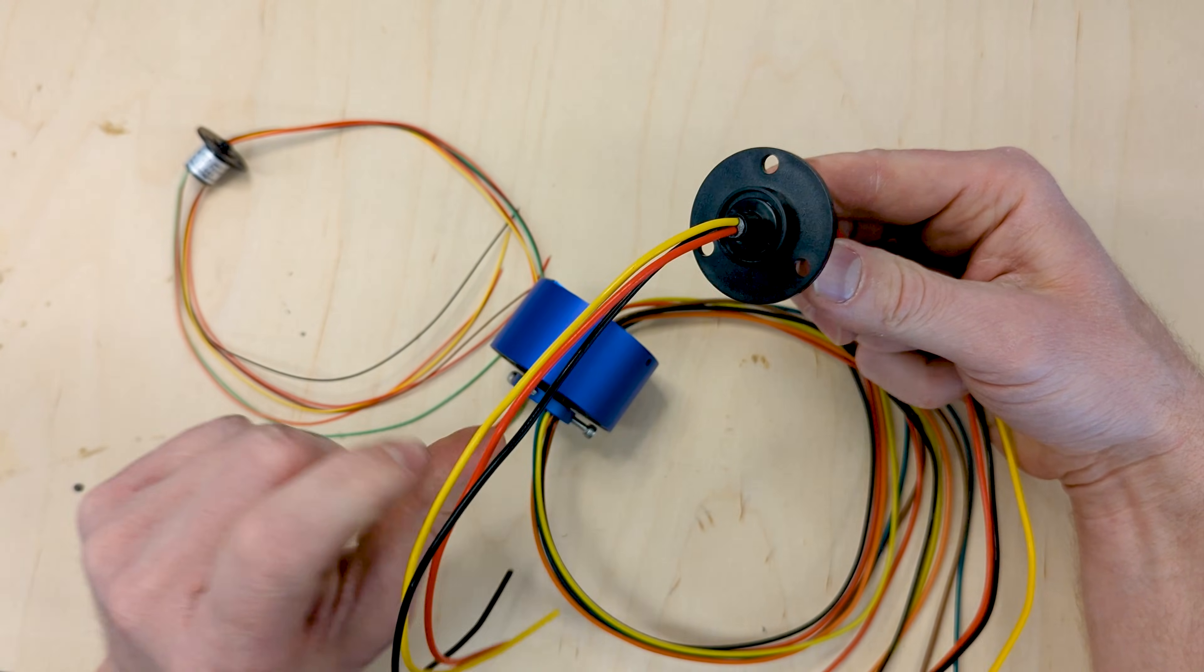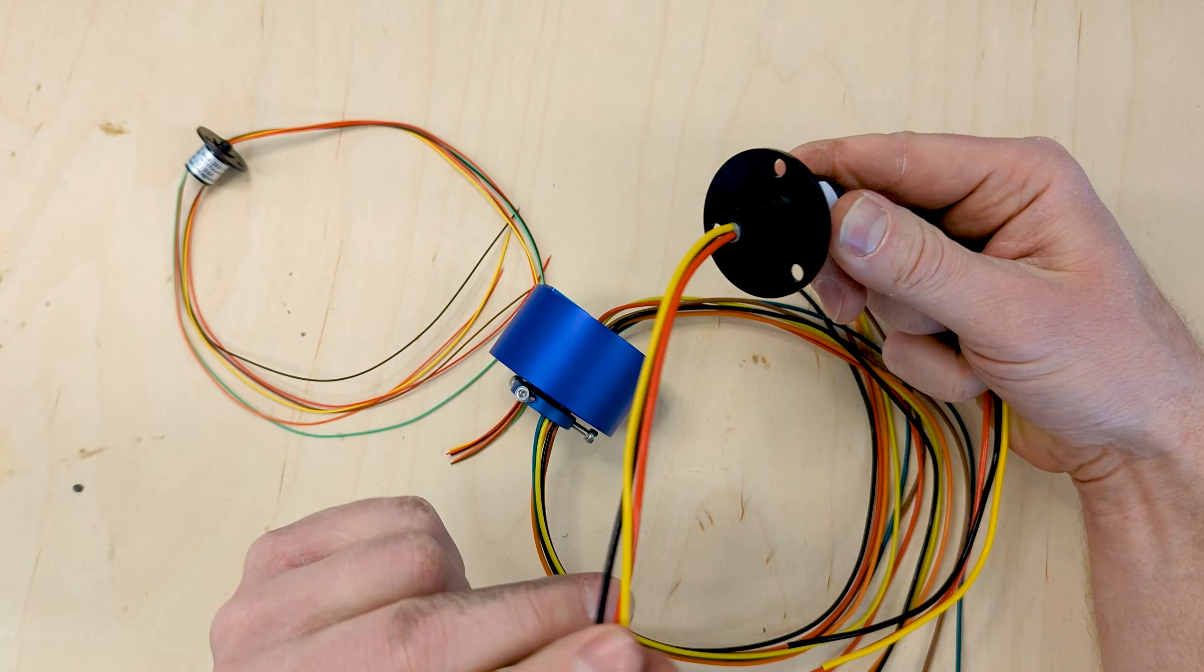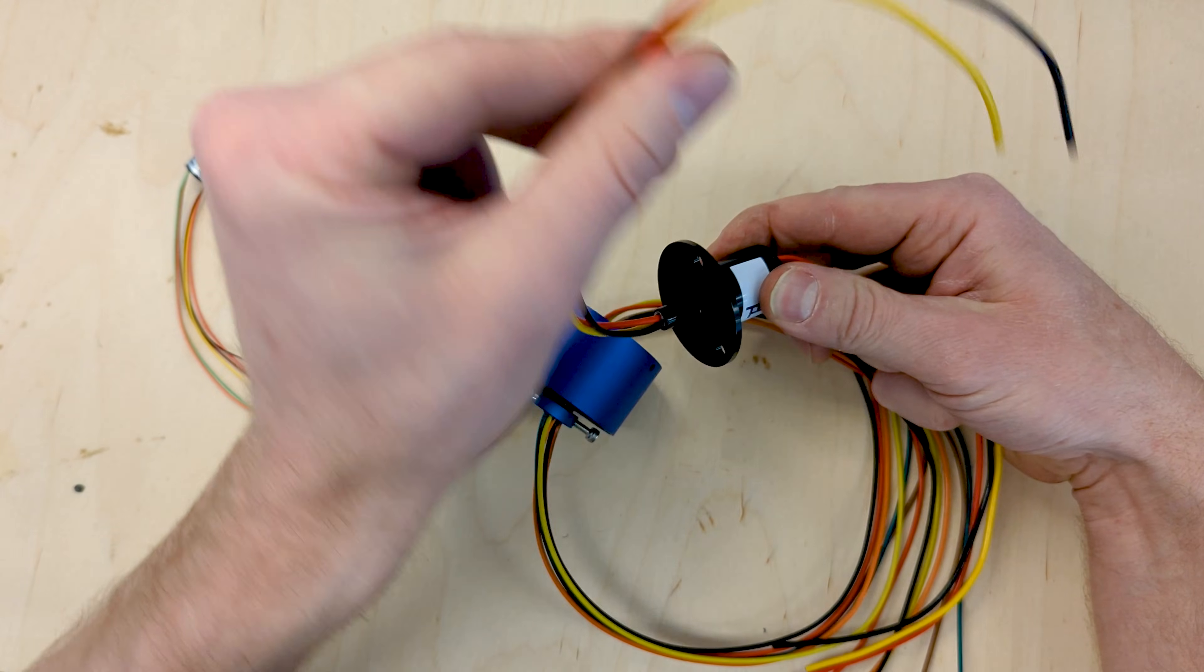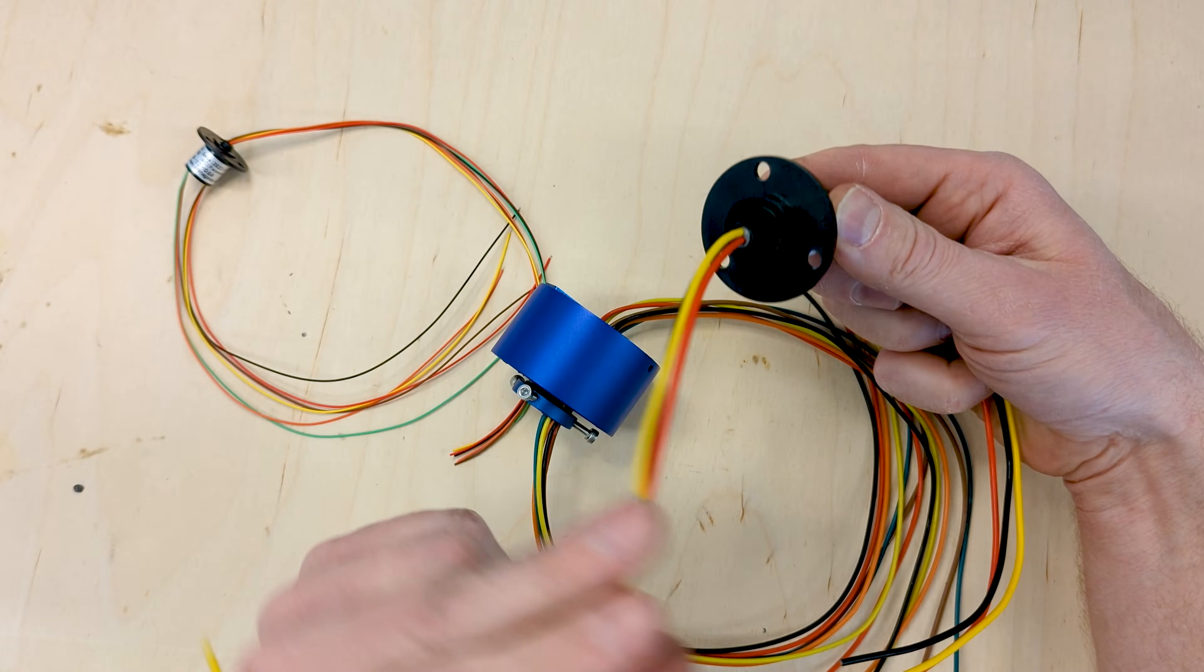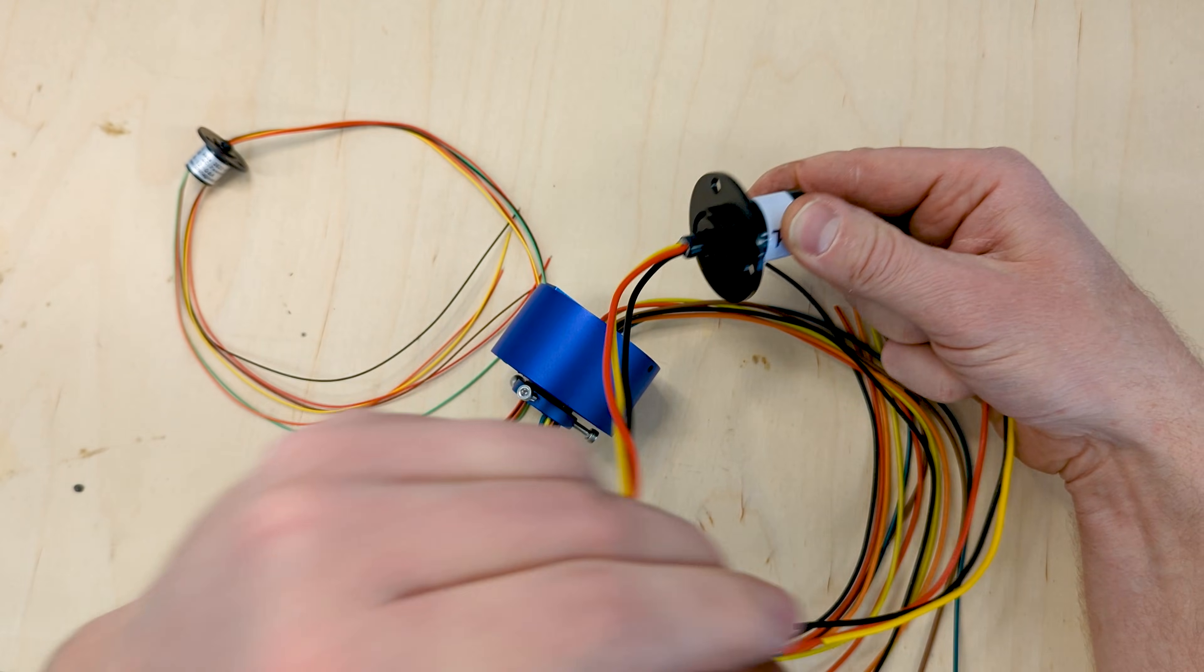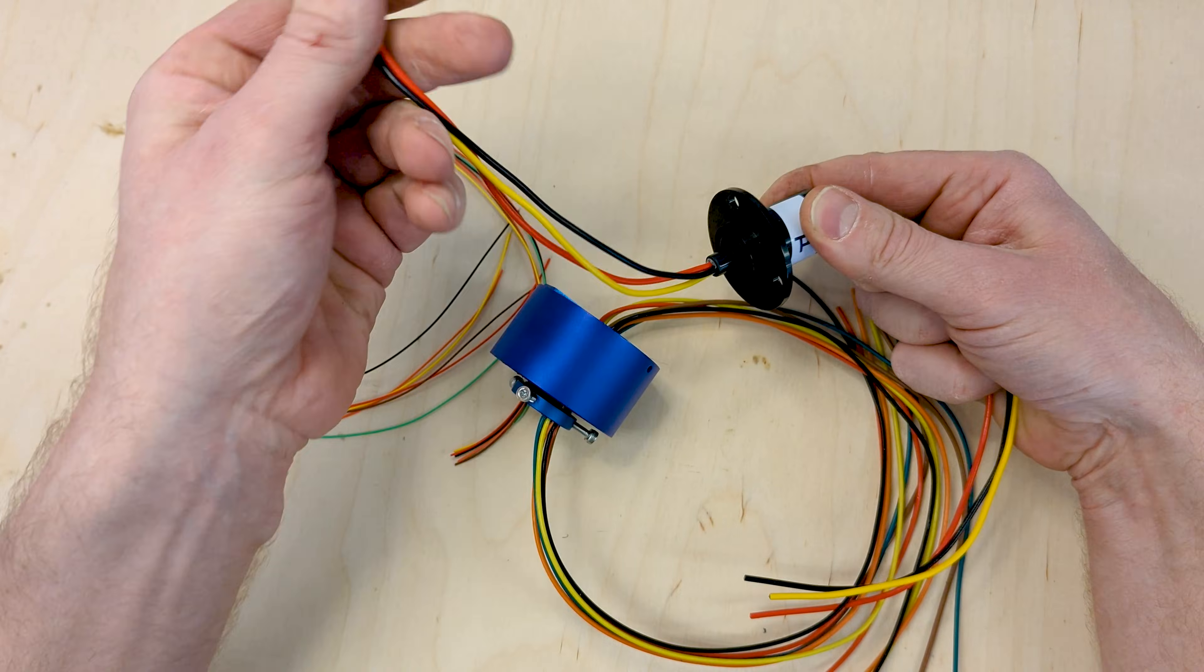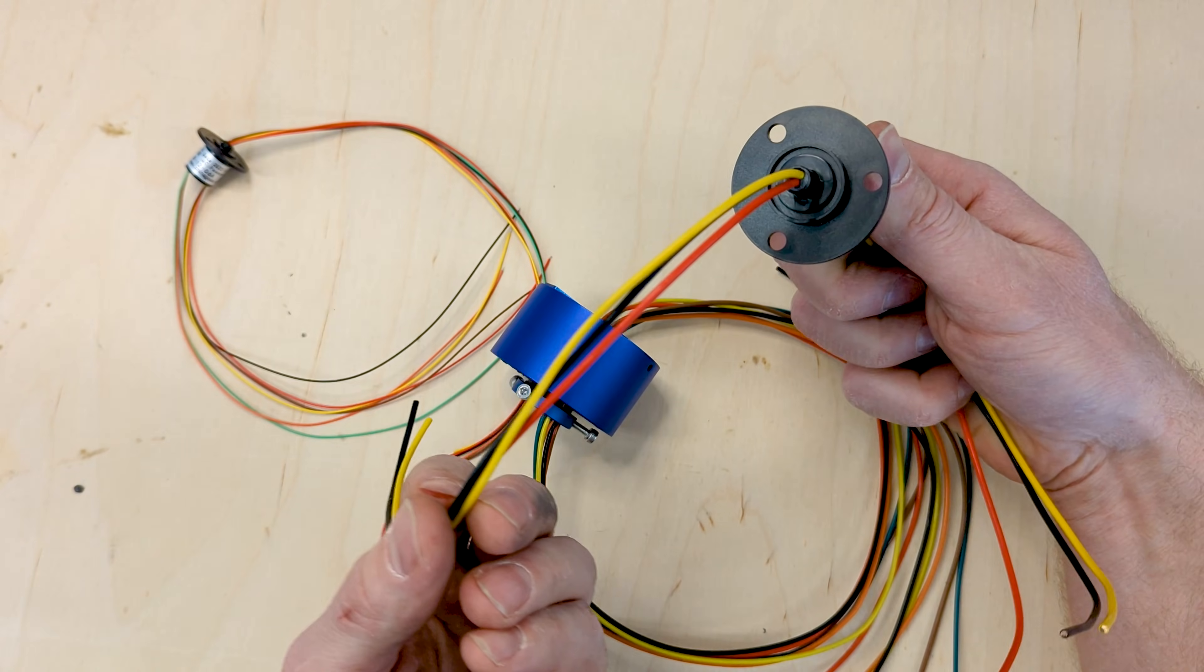It's what will mount to something else, and then this end will spin. I can spin this as long as I want and the wires will not get tangled, yet they'll give constant power to devices on the other end.